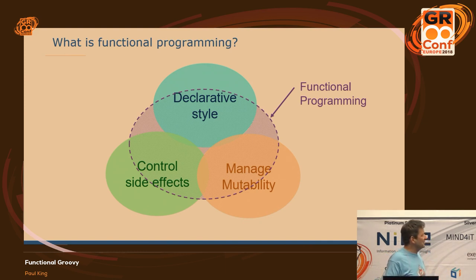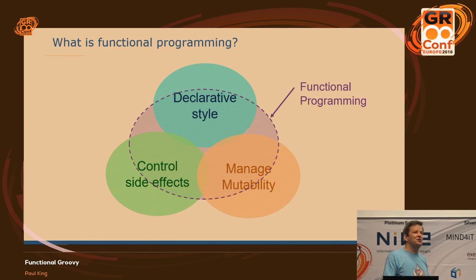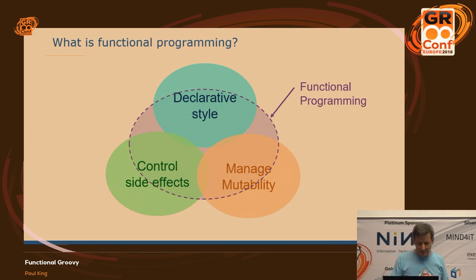The other thing is managing mutability. An advocate of functional style would say 'immutable data structures everywhere.' I'm not going to suggest that's what you need to do. What I'm going to suggest is: if you are going to have mutable data structures, be very aware of where you're using them and the impacts throughout your code base. We'll have a look at some options for that as well.